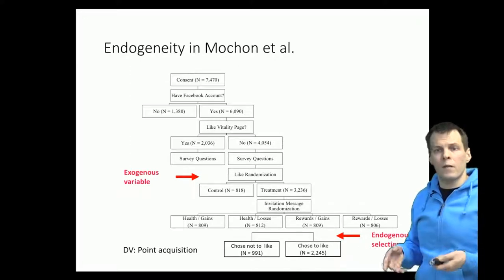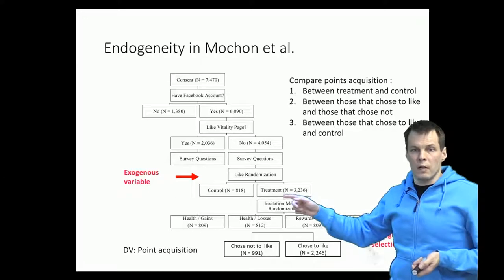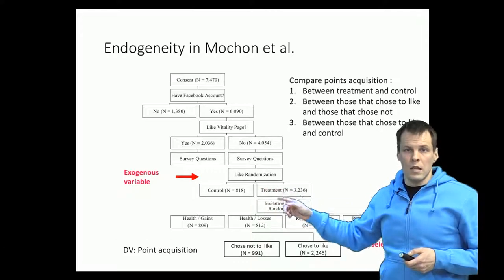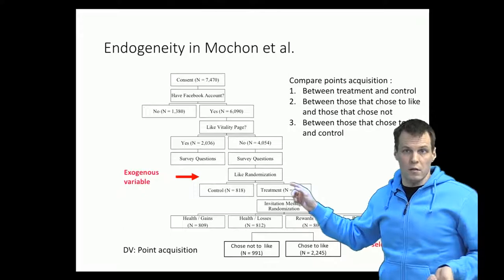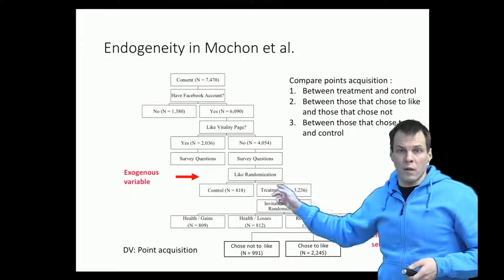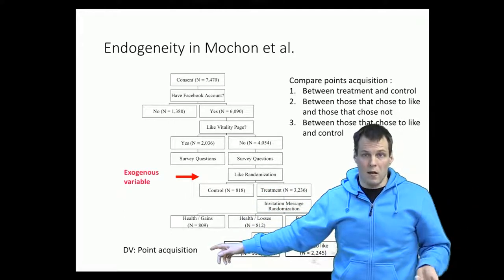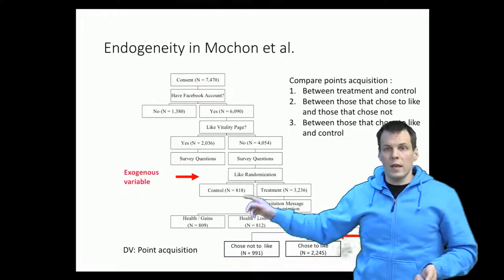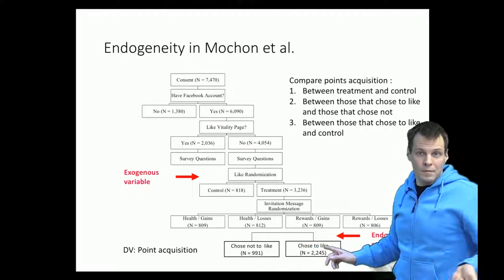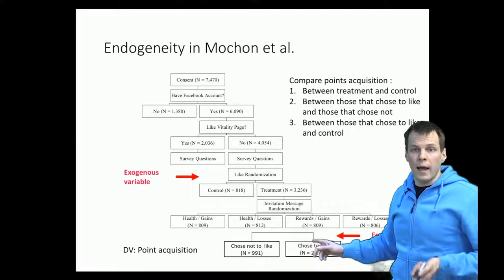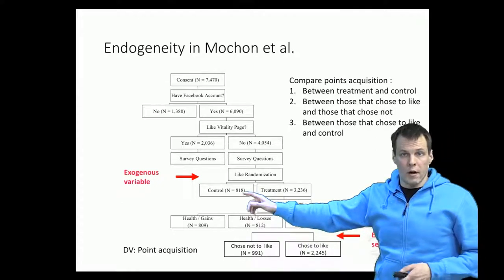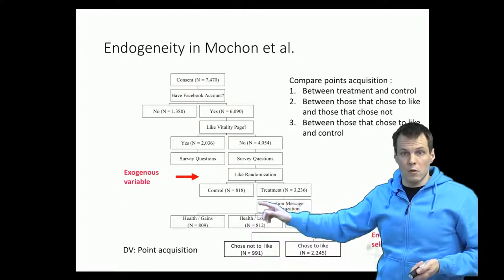We have basically a few options. We can compare treatment and control groups, but that doesn't give us the effect of the like, because some people in treatment chose not to like the Facebook page and some people in control could have liked the page anyway. We also can't compare those who chose to like versus those who chose not to like, because that is endogenous selection. And we can't compare those who liked against the control, because the control contains people who would have chosen not to like had they been asked.